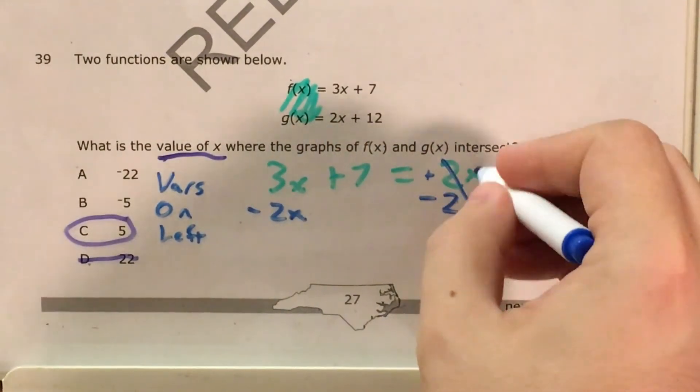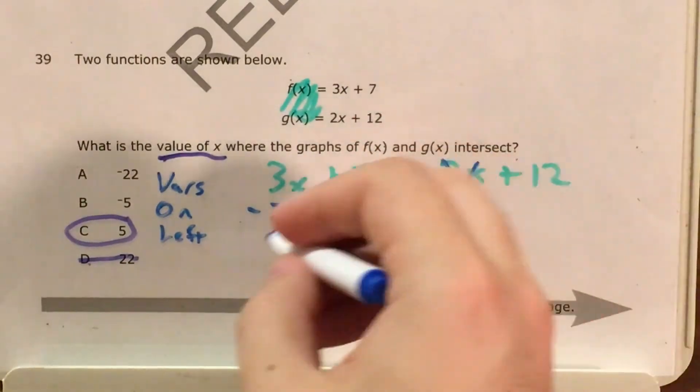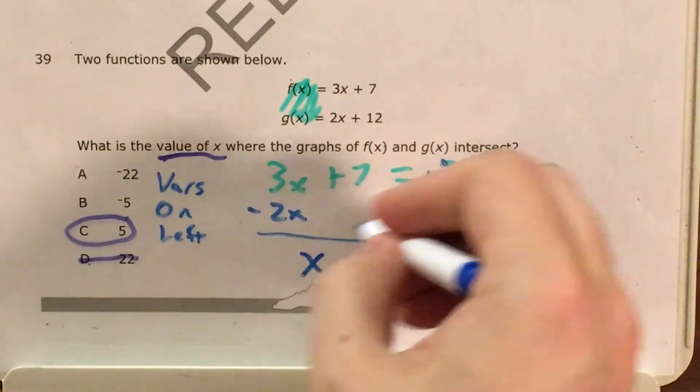Subtract 2x plus 2x and minus 2x cancel out. And 3x minus 2x gives me 1x, also known as x.